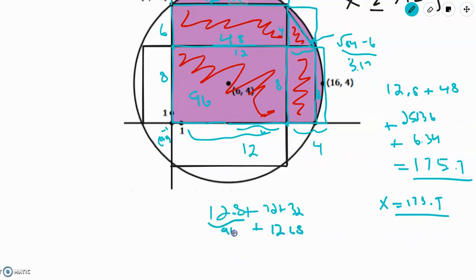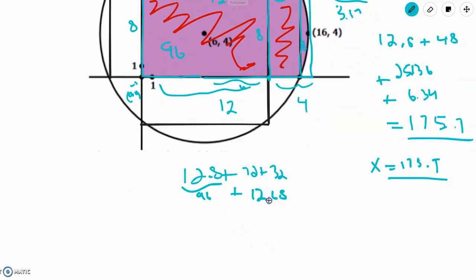plus this square, which is about 3.17 times 4, which is about plus 12.68. This is 96. So if we add these all up, we'll get 96, plus 72, plus 32, plus 12.68, which is equal to 168, plus 32, plus 12.68, which is 212.68.